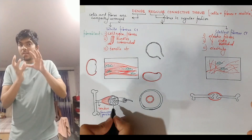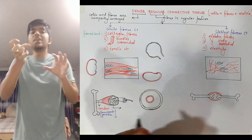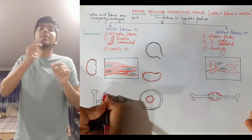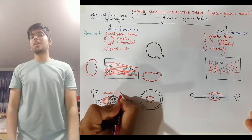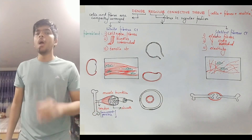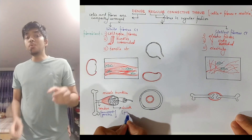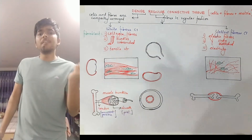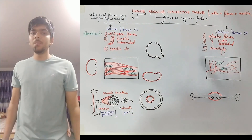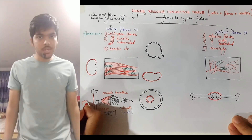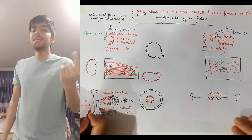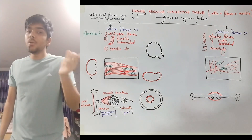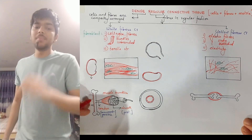The muscle itself is found in bundles, and these bundles are covered by a muscle bundle sheath, which is also made up of white fibrous connective tissue, providing protection. The bone to which the muscle attaches is covered by a layer called the periosteum — 'peri' meaning around or periphery, and 'ostium' related to bone — which is also made up of white fibrous connective tissue.